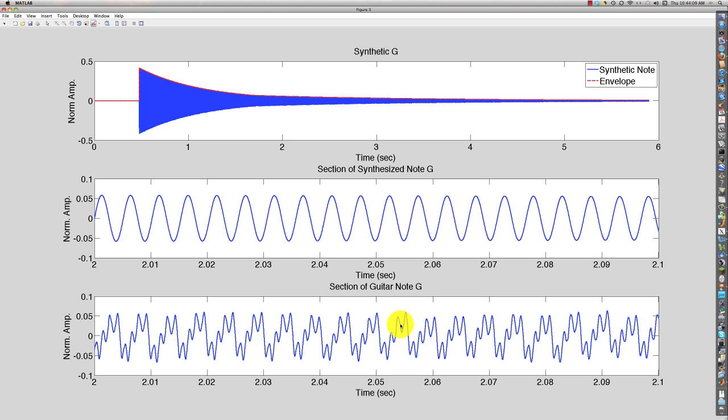The fine structure is not present because we're only using a single sinusoid. If I were to use additional harmonics, as we showed with the saxophone note in a previous lecture, then I could do a better job of capturing the fine structure. So, let's listen to this now. That's the original note by the guitar. Here's my synthetic one.